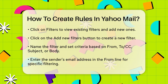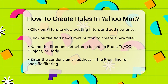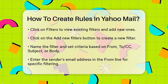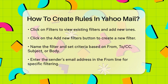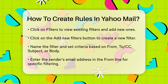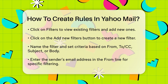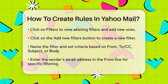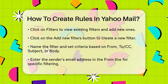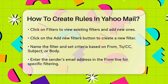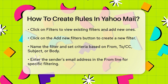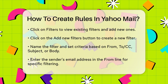Give your new filter a name, and then set the criteria for the rule. You can choose from options like From, To, CC, Subject, or Body. For example, if you want to move all emails from a specific sender to a particular folder, enter the sender's email address in the From line. Make sure the Match Case box isn't checked if you want the rule to apply regardless of capitalization.